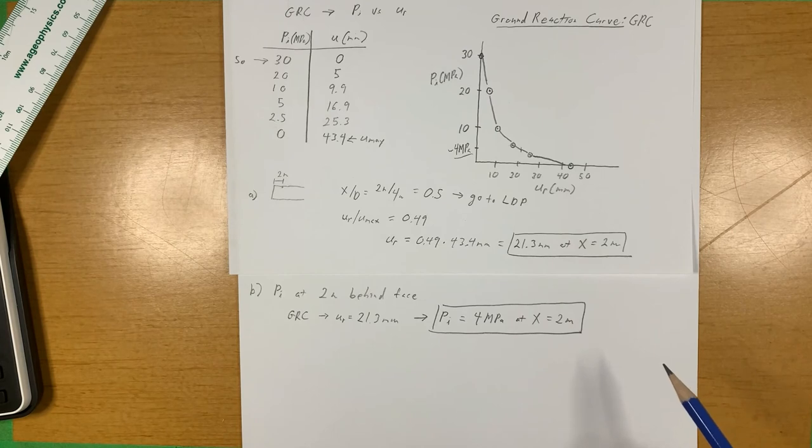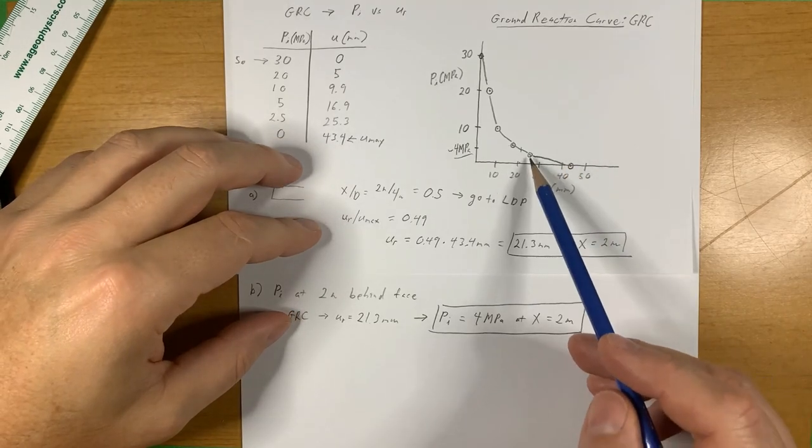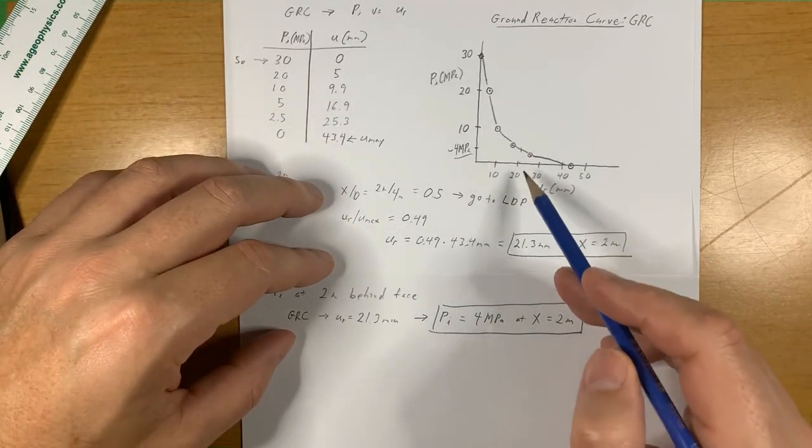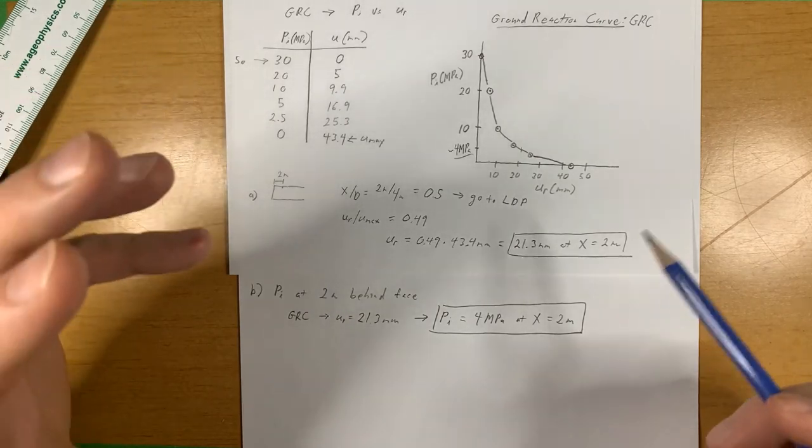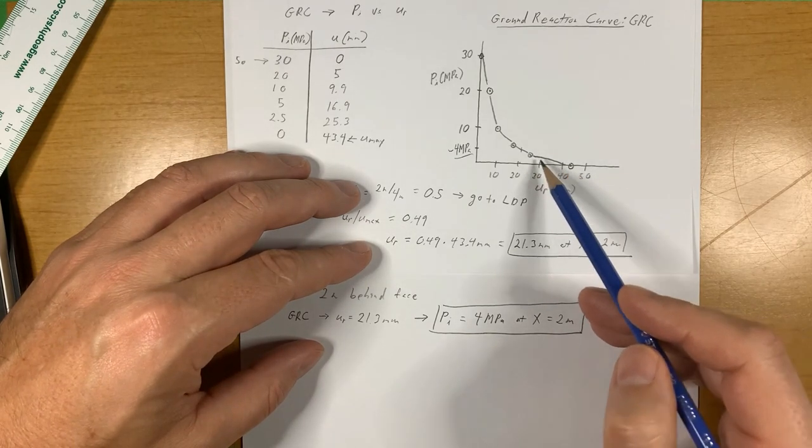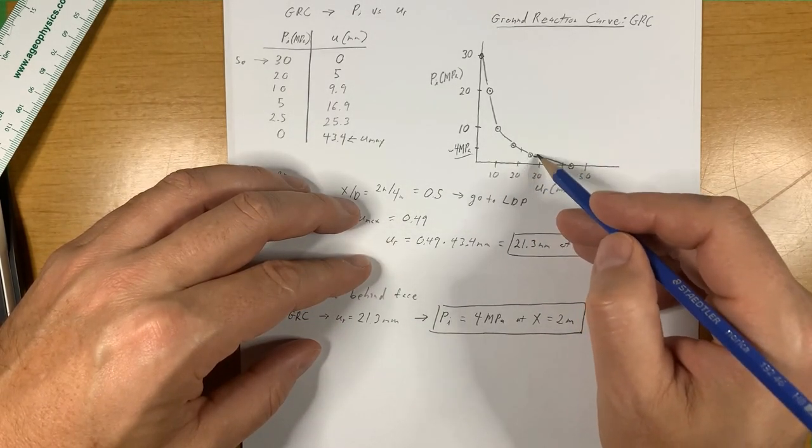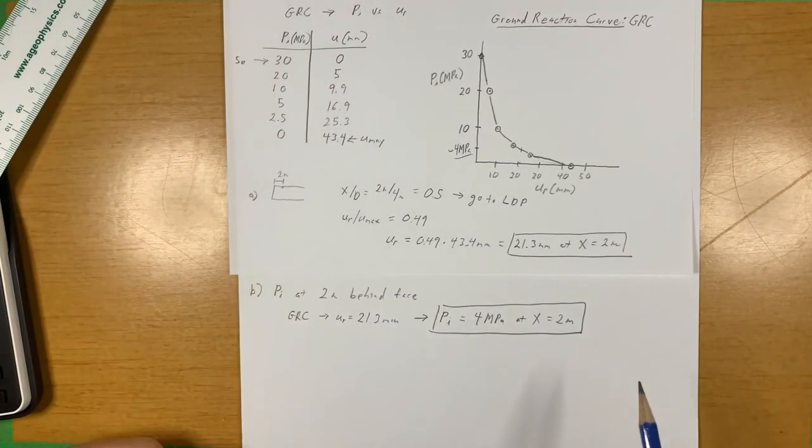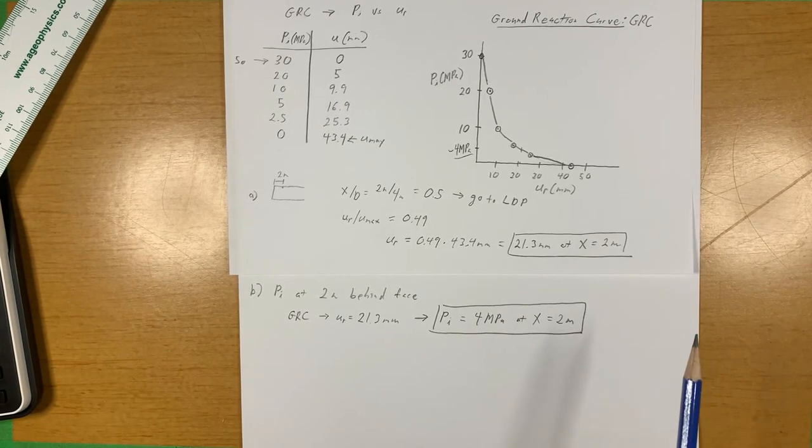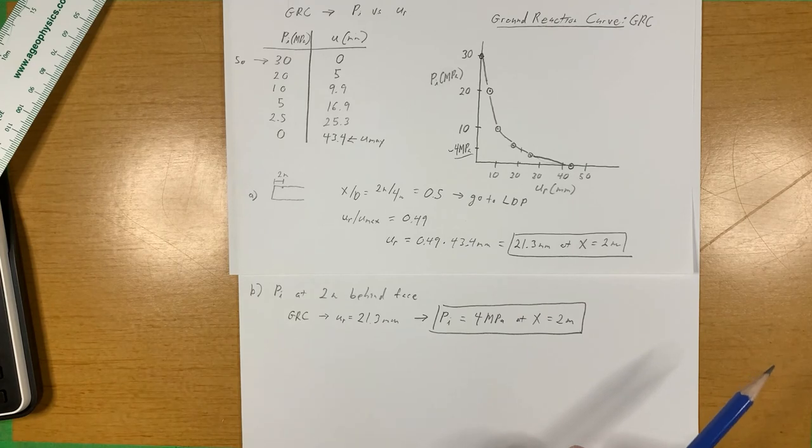That can give you some insight into a few things related to ground support. If you put some ground support in there, you could have some sense that it's going to probably have to withstand at least 4 MPa of pressure. And you would expect that it would have to withstand the remainder of this displacement. I hope that those numbers help you to get a better sense of how the LDP and the GRC interact and work together in tunnel design.